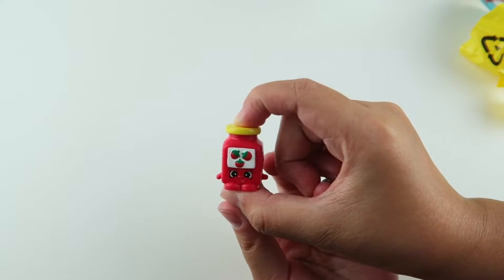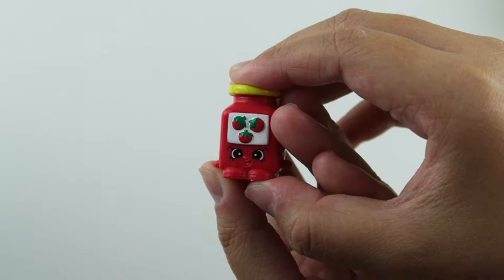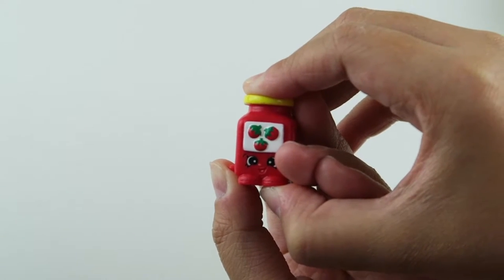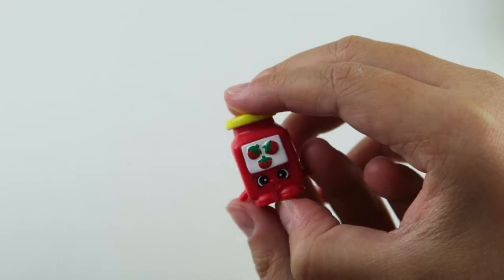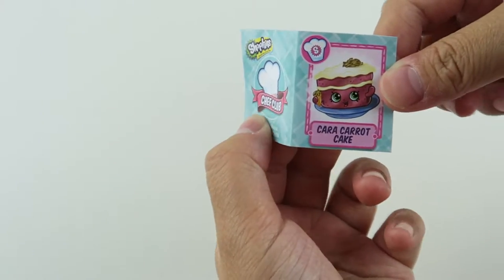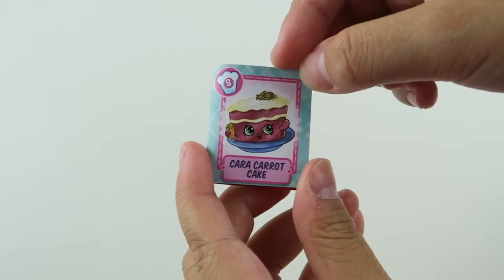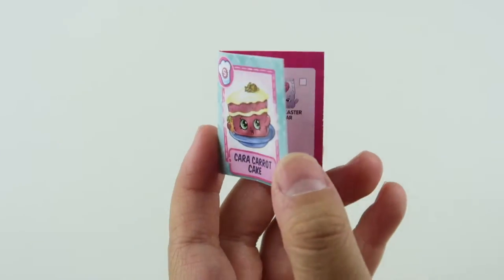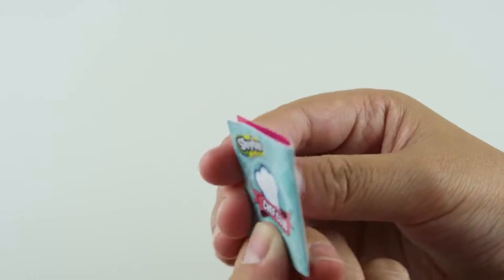So we got like tomato sauce. His name is Tommy Tomato Paste and he is used to make veggie pizza. And he is a common. And for the recipe card I got Kara Carrot Cake. That's cute. Here are all the ingredients to make the carrot cake. So I'm going to keep this for my recipe.